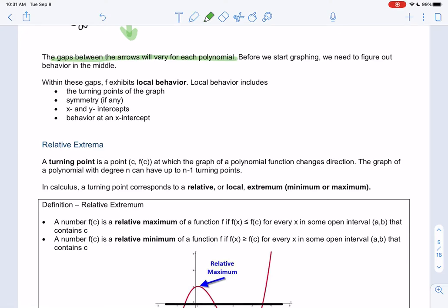Let's talk about things that might go on in the middle. We're going to call this local behavior because it's going to be local to an area, but it's like the middle behavior. So things we're going to look at: turning points, symmetry sometimes, intercepts, and a new thing - behavior at the x-intercepts.